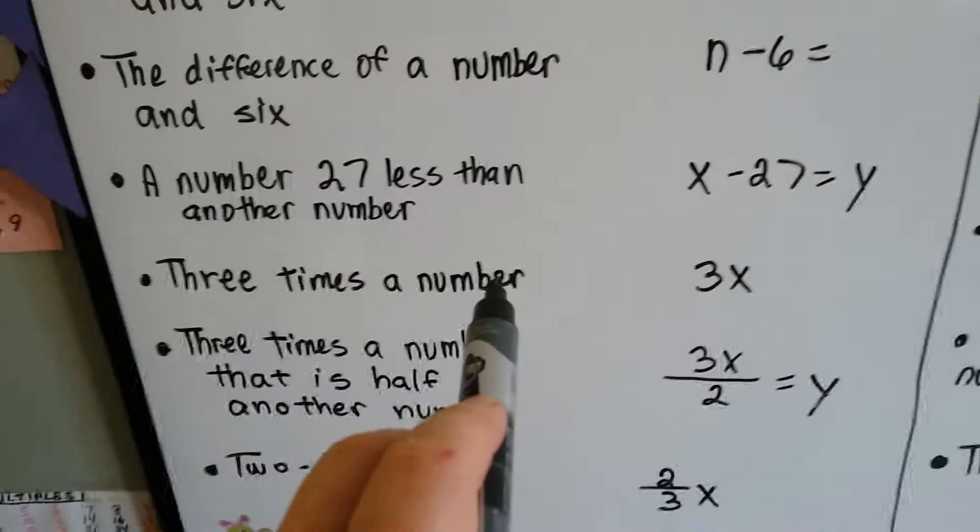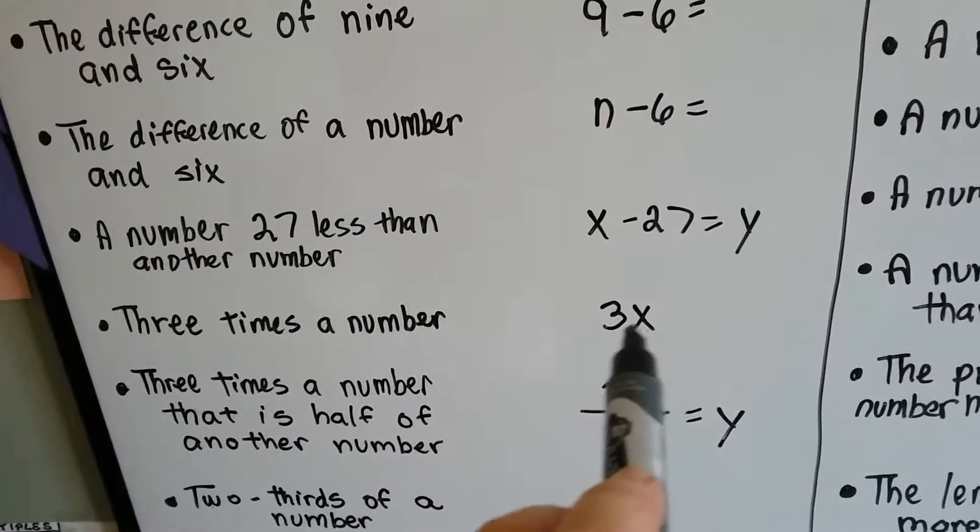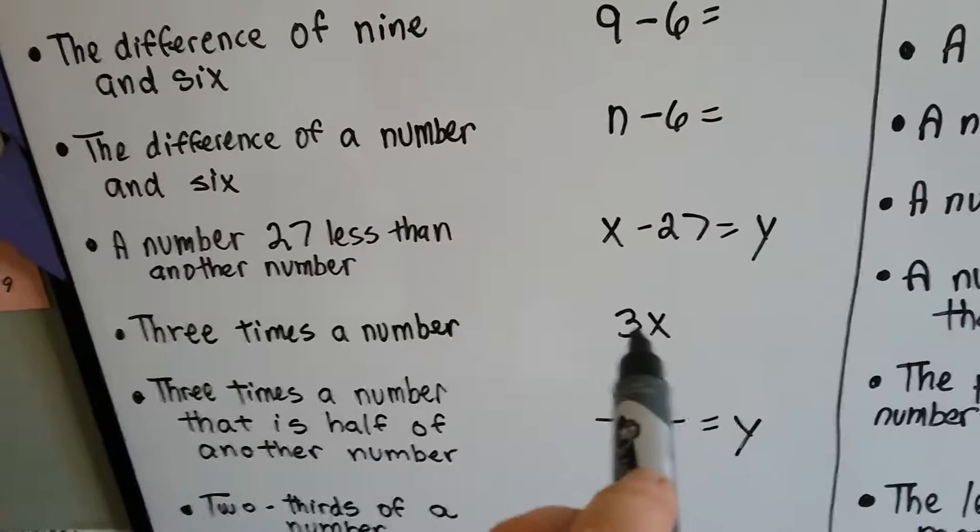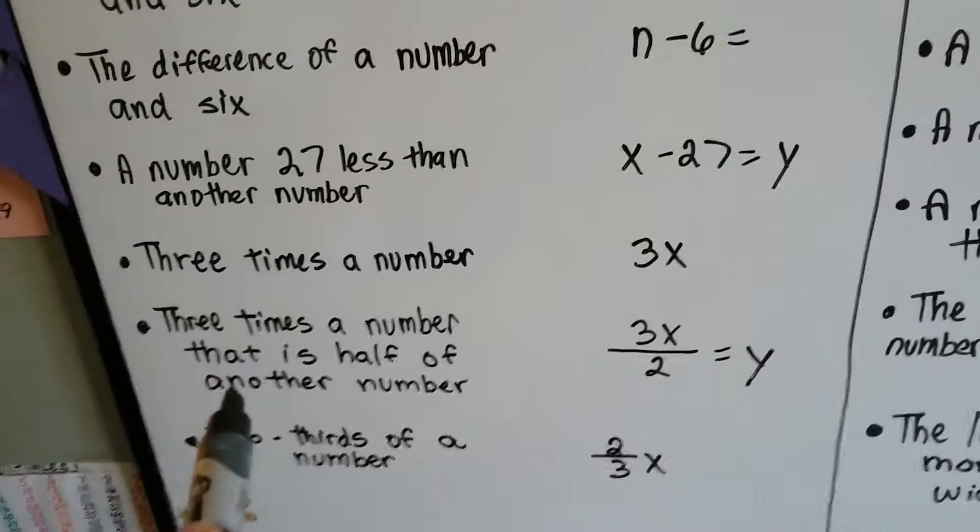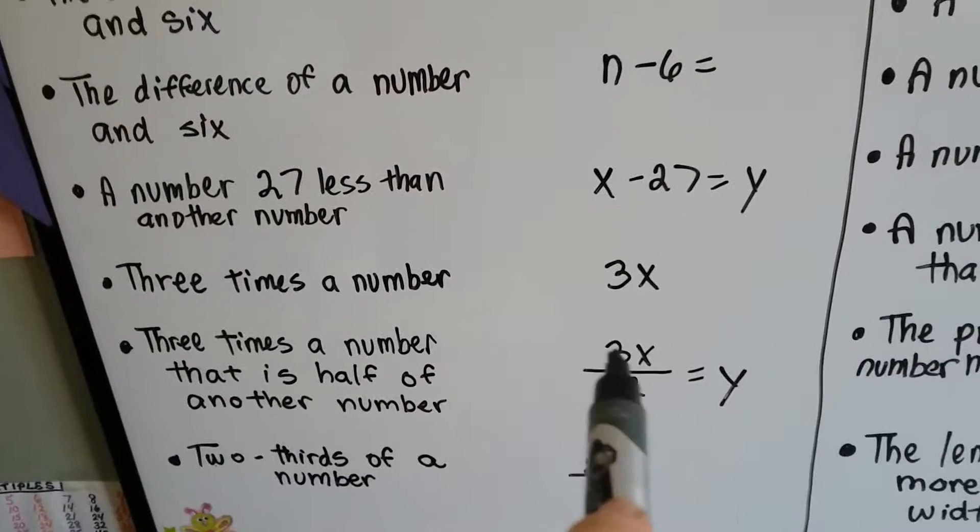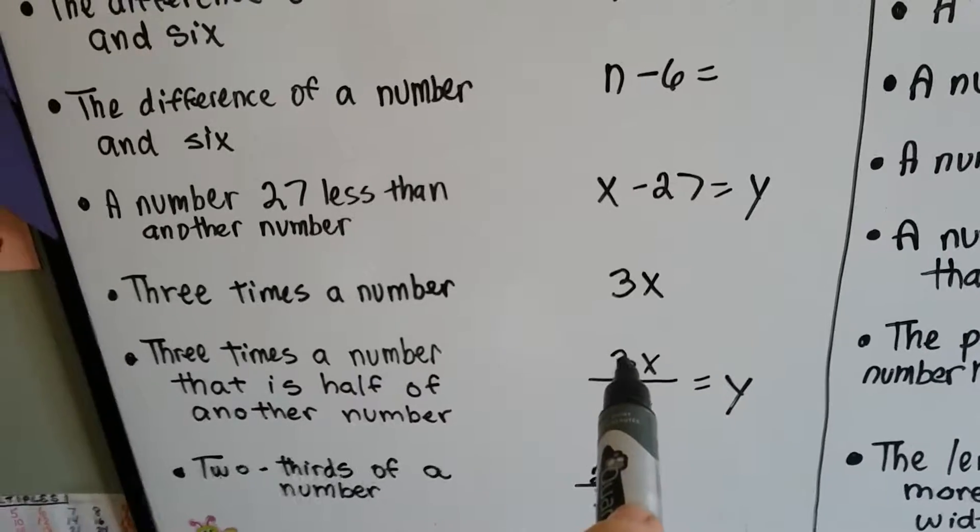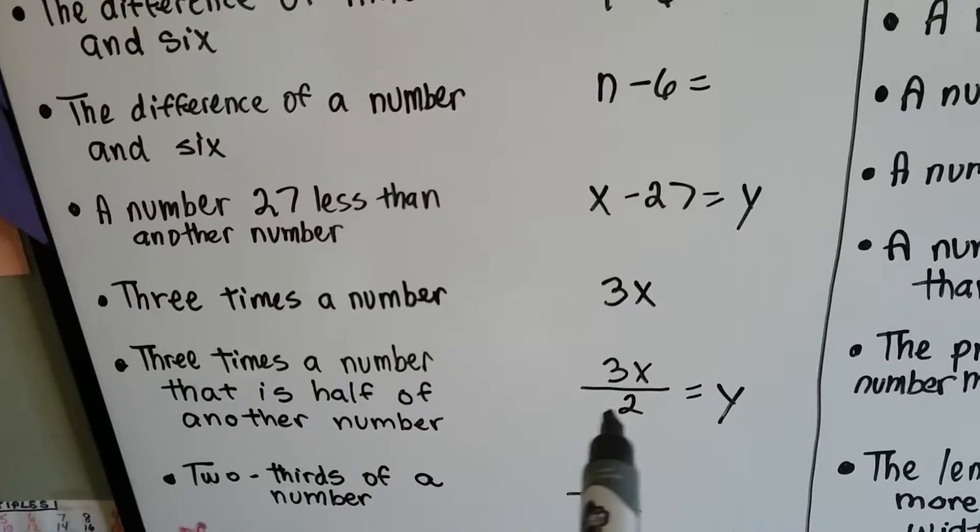If it says 3 times a number, we can just use 3x or 3y or 3n, whatever variable you need. 3 times a number that is half of another number. We know it's 3 times a number, so we've got 3x.